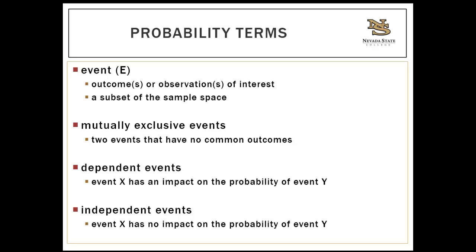Mutually exclusive events are two events that have absolutely no common outcomes — if one event happens, it precludes the other from happening. For instance, if you arrive in an ambulance, you're not going to walk in — you can't do both. The method of arrival to the hospital is a mutually exclusive event. Similarly, if you roll a pair of sixes, you know you aren't rolling a two or a three — it's impossible. One happening precludes the other.